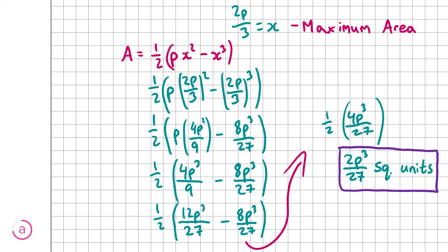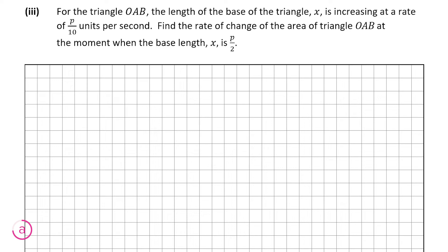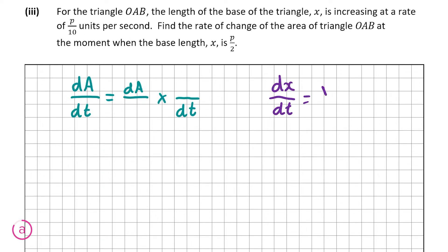Now let's look at A part 3, worth 10 marks. We're told that the length of the base of triangle AOB, x, is increasing at a rate of p/10 units per second. We have to find the rate of change of the area when the base length x equals p/2. The rate of change of the area is dA/dt. Using the chain rule, dA/dt equals dA/dx times dx/dt. We're told dx/dt equals p/10.